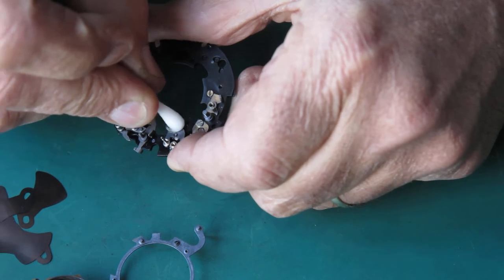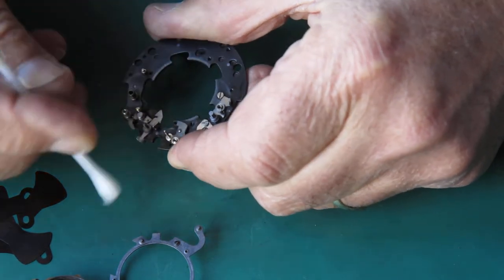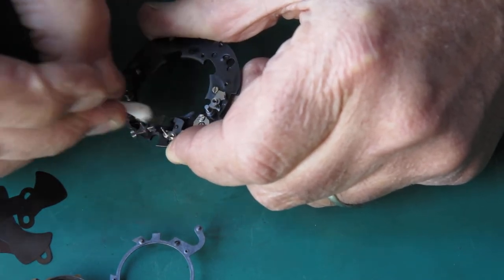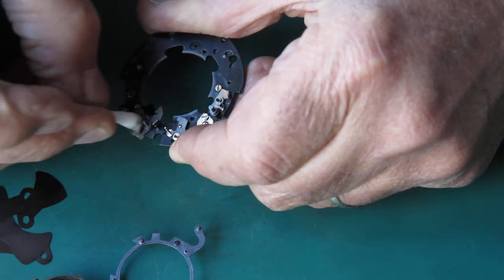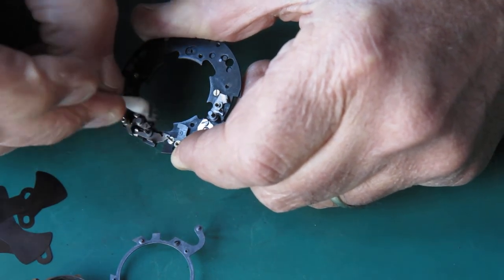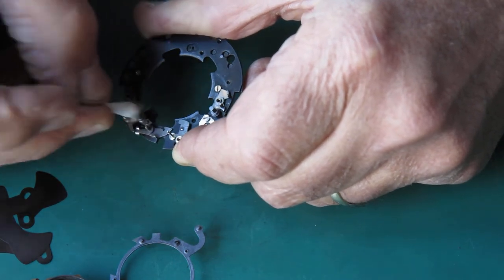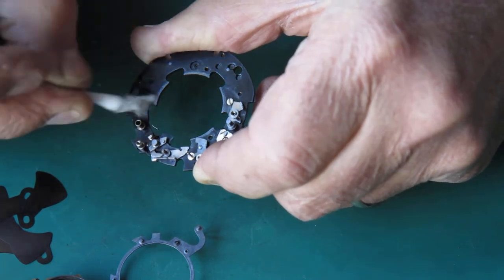And the little pallet here which controls our flash sync speed, that should move freely. Usually it would be very rare that you'd have any problem with that. Sometimes people have been a bit over generous with graphite grease in the past and some of these components are pretty much gummed in place with it.